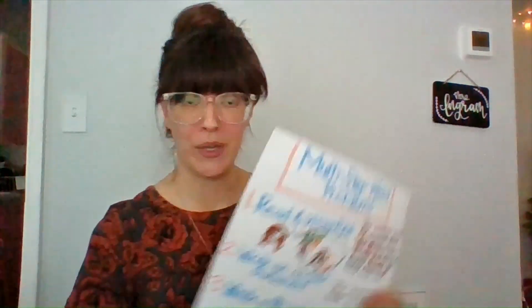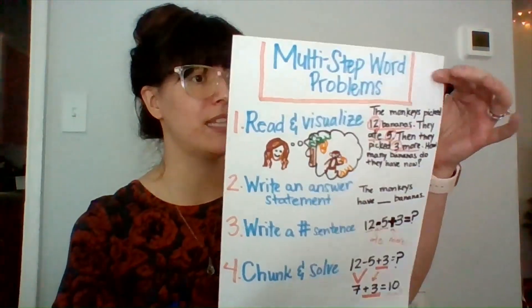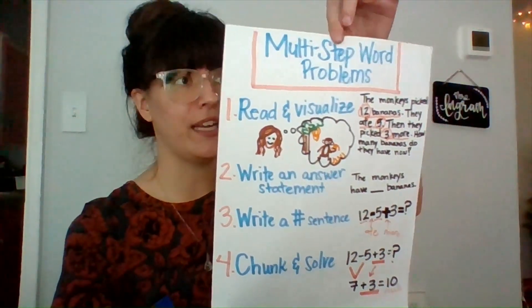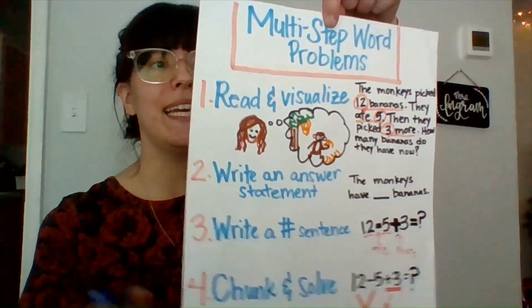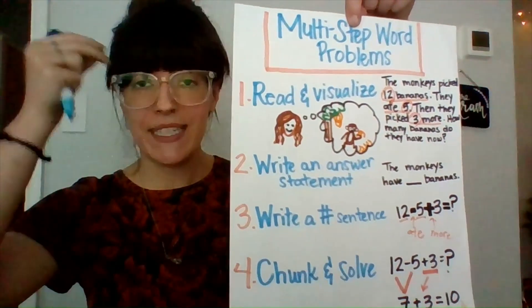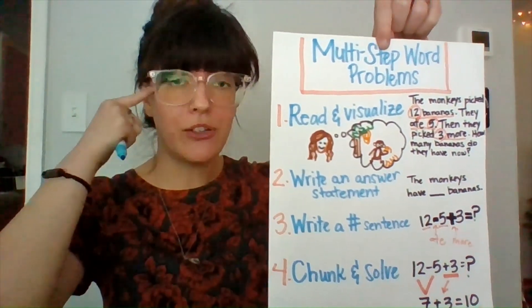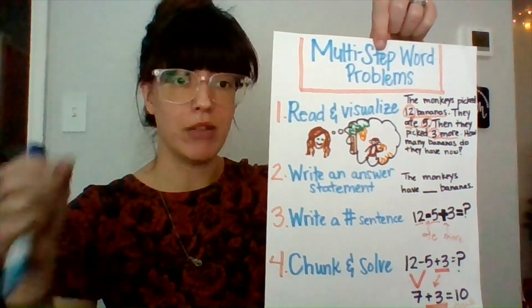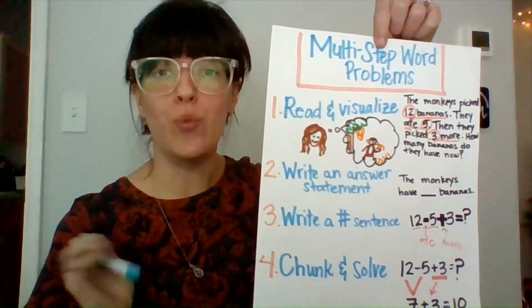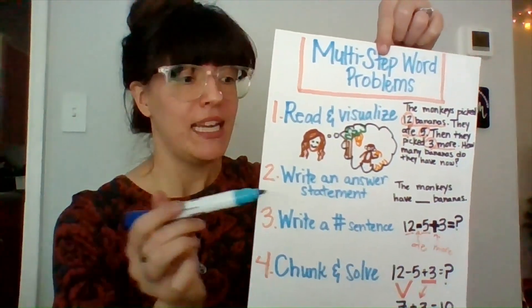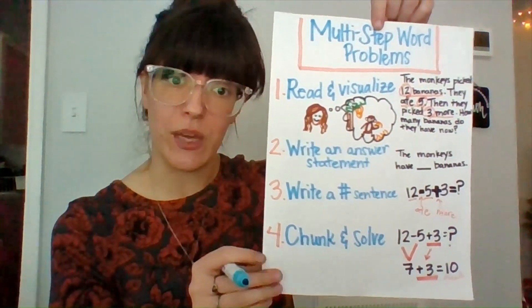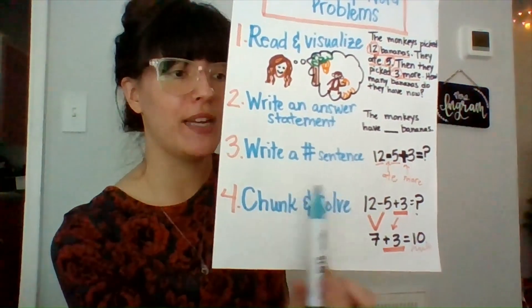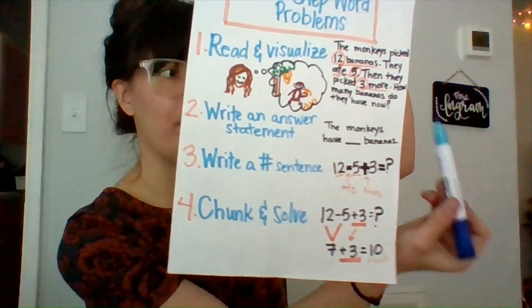Now, just very quickly, before we go ahead and look at a problem, let's remind ourselves our steps to solve it. So when we are solving a multi-step word problem, the very first thing we need to do is read and picture what is happening in the problem in our minds. This helps us understand what's going on in the problem. Next, we need to write an answer statement. The answer statement is what helps us make sure that what we're solving actually gives us the answer that we need. Then we're going to create our number sentences from our problem, and then we just chunk it down and we solve it.